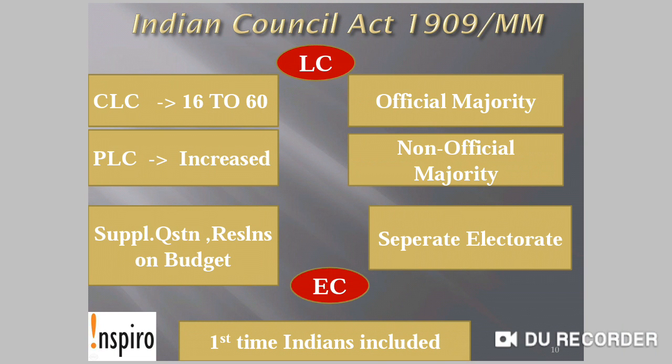Indian Council Act 1909, also known as the Morley-Minto Reforms. It is also known as the Act which gave communal representation. Under this, the Central Legislative Council's numbers were increased — though the official majority was maintained — and Provincial Legislative Council numbers also increased, but it varied from province to province and could not be uniform.